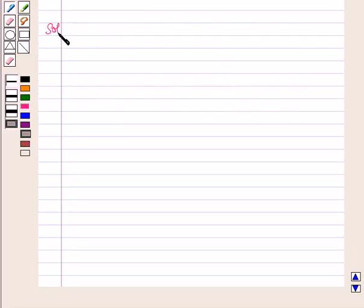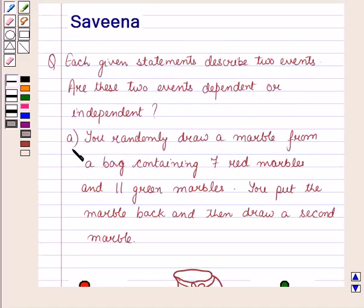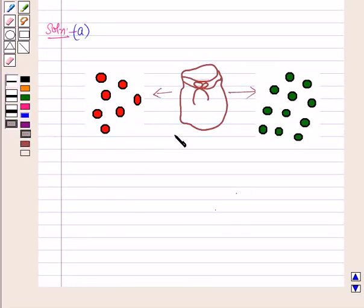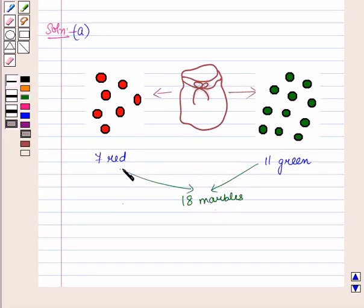Now let us start with the solution of the given question. First of all let us start with the A part. In the first part it is given that a bag contains seven red marbles and eleven green marbles. Now in total there are eighteen marbles, that is seven red marbles plus eleven green marbles.